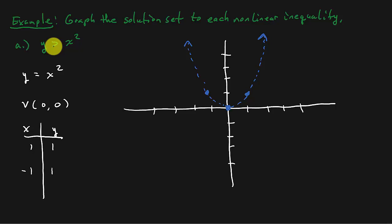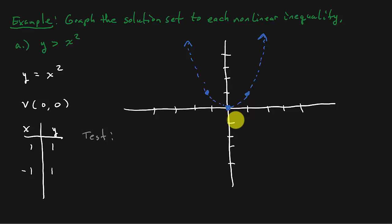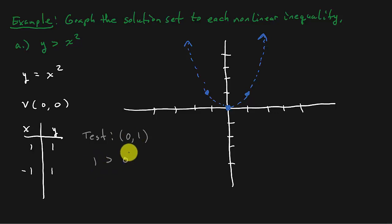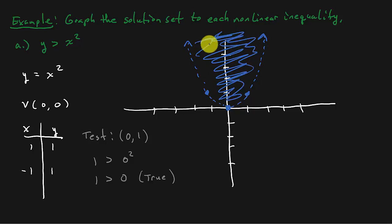I need to pick a test point. On this problem I can't choose (0, 0) because the graph goes through (0, 0). So pick another point — how about (0, 1)? The graph doesn't go through that point. So x is 0, y is 1. Plugging in: 1 is greater than 0 squared, which is 1 greater than 0. That is a true statement. The point I chose was inside the parabola, so everything inside gets shaded.